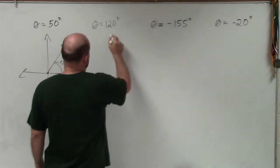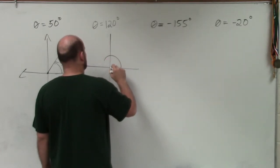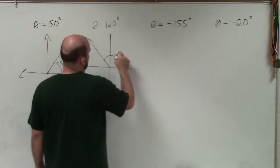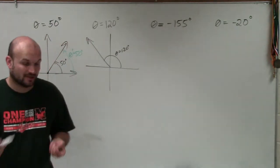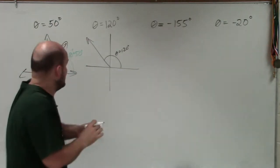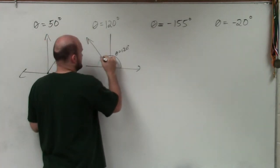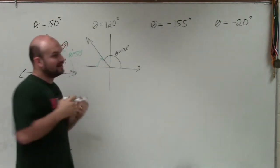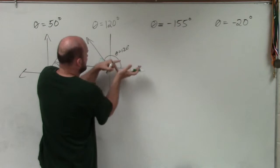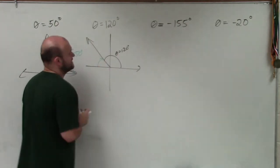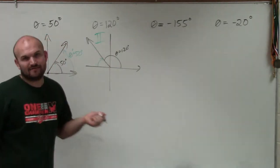Now let's look at 120 degrees. If I have 120 degrees, that's roughly going to be somewhere like here. So theta equals 120 degrees. Now the reference angle is going to be the acute angle between the terminal side, which is here, and the x-axis. So that's going to be from here to here.